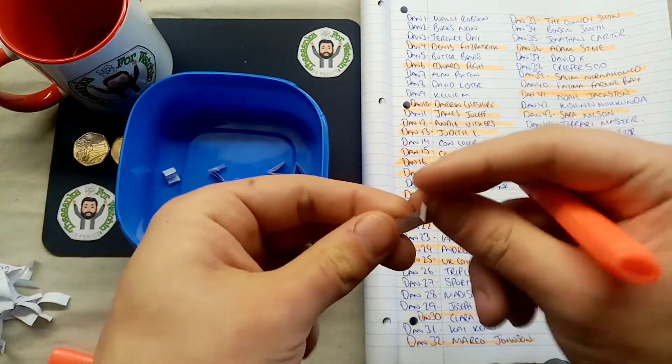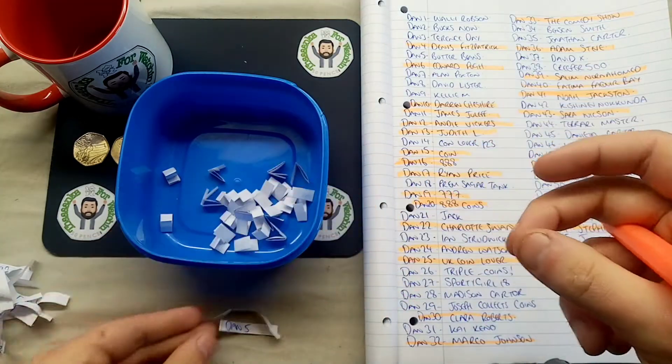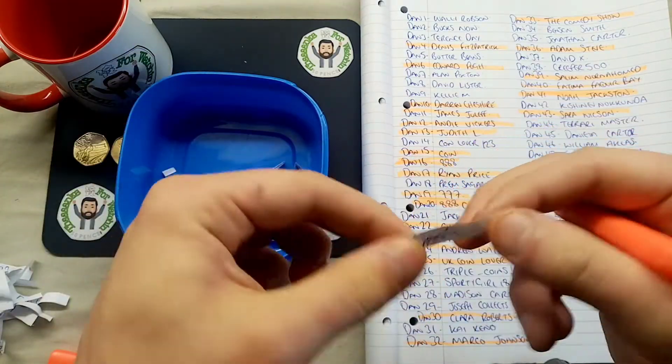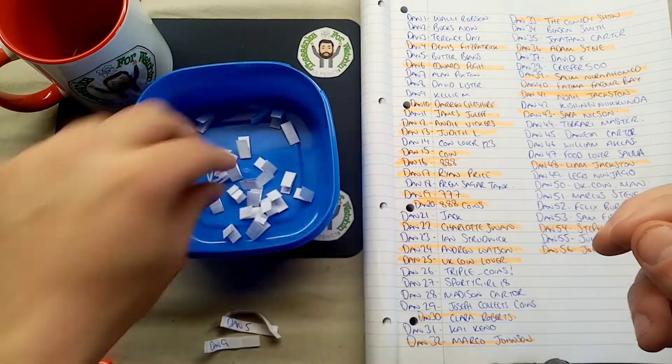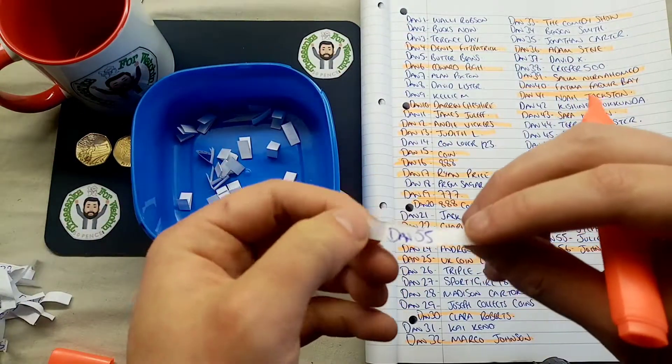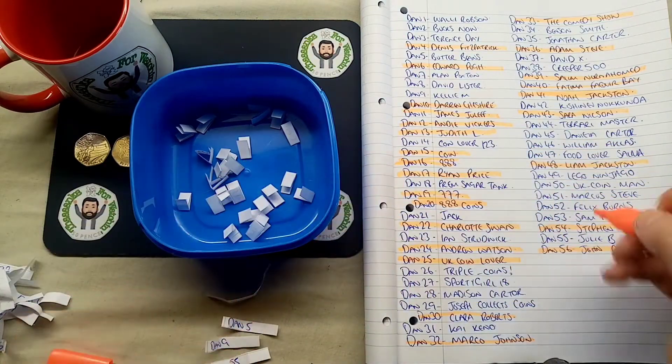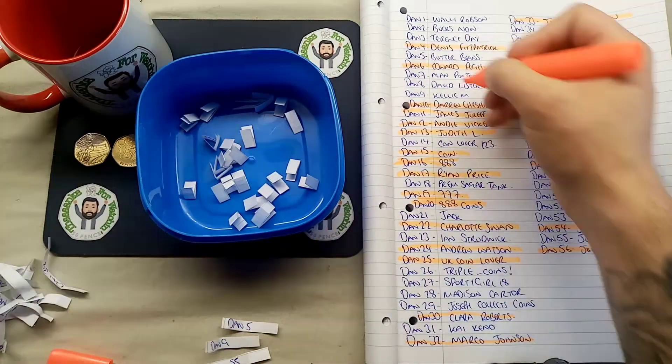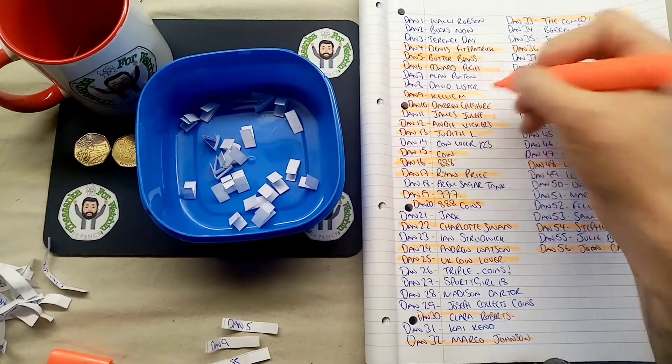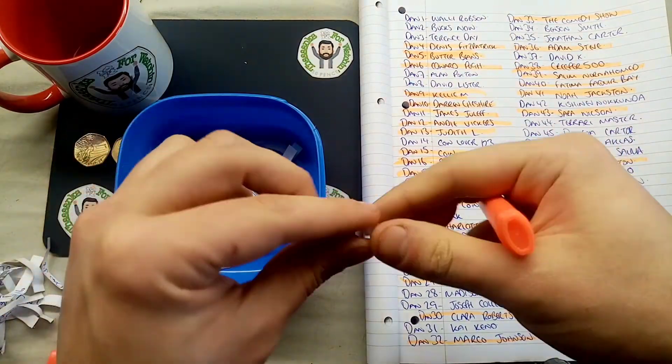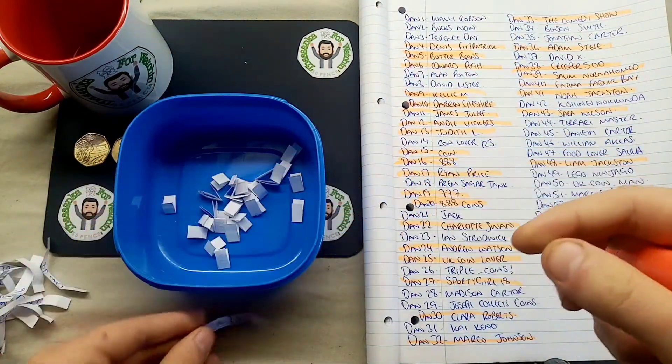Moving on then we've got Dan number 38. And that's followed then by Dan number five. The third one in this sequence is Dan number nine. We'll get two more then. We need two more in this round. Dan number 55. A high one. And also Dan number 27. So unfortunately that's the end of Creeper 500. Also Butter Beans. Kelly M out in this round. Along there with Julie B.